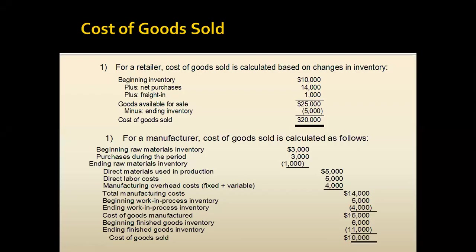In this video we are going to discuss the cost of goods sold for a manufacturing company. In a manufacturing company we are buying raw material and by applying overheads and labor on this raw material we are converting it into finished goods. For example, say we are in the furniture manufacturing industry.